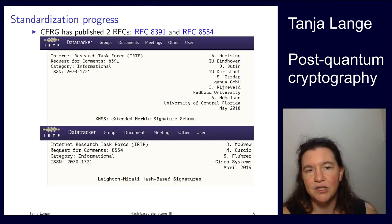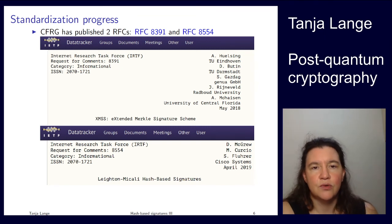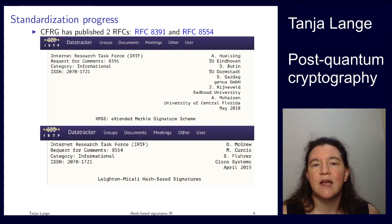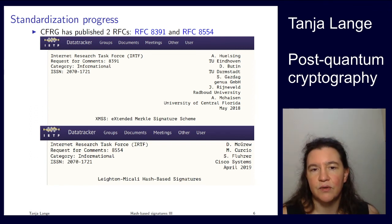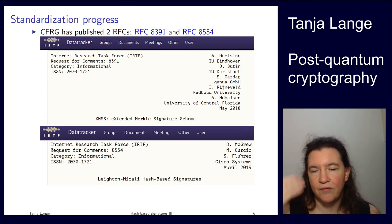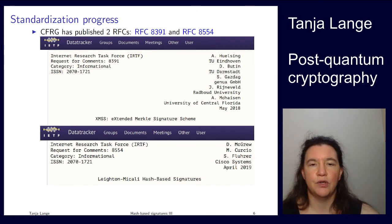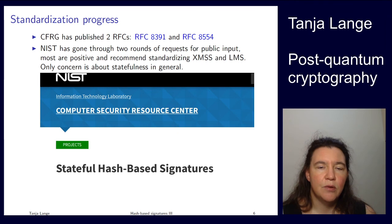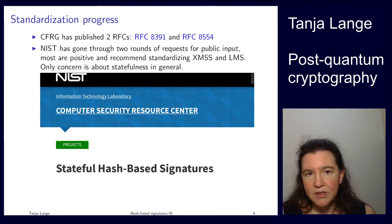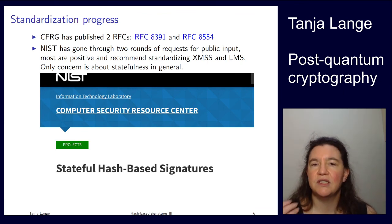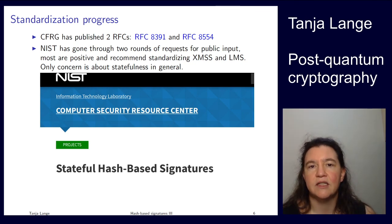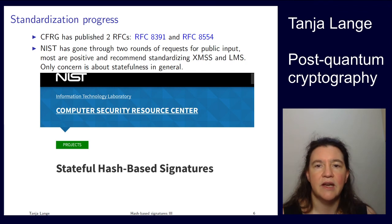The CFRG — the Crypto Forum Research Group, the research arm of the IETF — published what are essentially internet standards, called Requests for Comments. One standard is XMSS, the eXtended Merkle Signature Scheme, which includes advanced features. The other is LMS, the Leighton-Micali Hash-based Signature Scheme. Both are fully specified. NIST, running its big post-quantum cryptography competition, handled stateful hash-based signatures in a separate process and has already standardized XMSS and LMS as NIST standards.